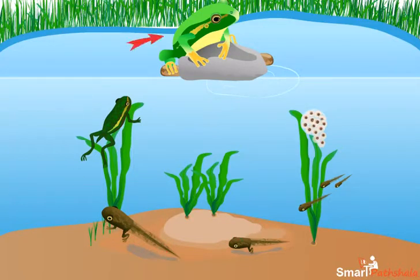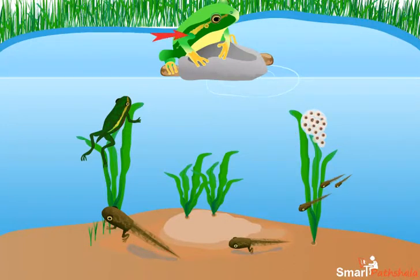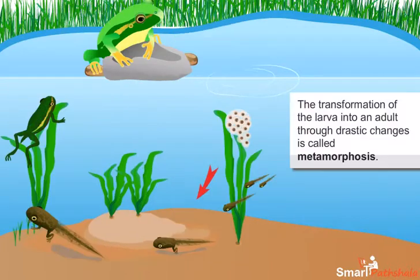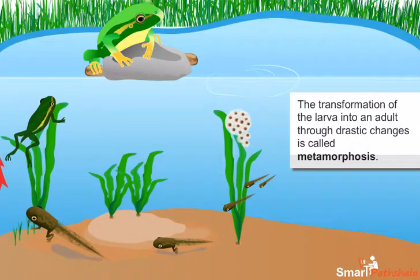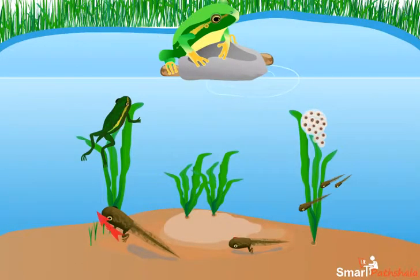The tadpoles gradually develop and then transform into adults which are capable of jumping and swimming. This transformation of the larva into an adult through drastic changes is called metamorphosis. Thus, a young frog develops into an adult frog.